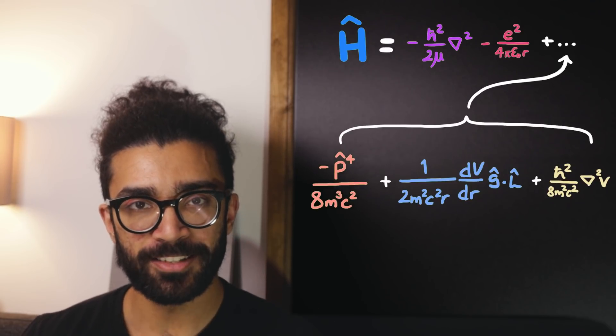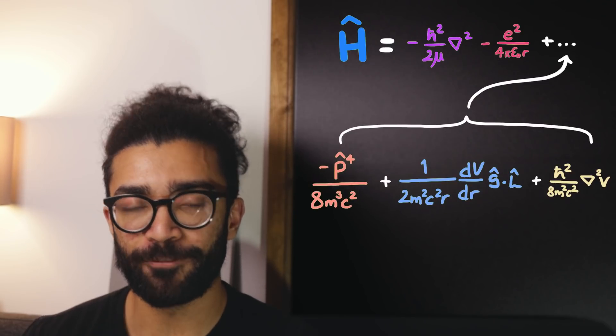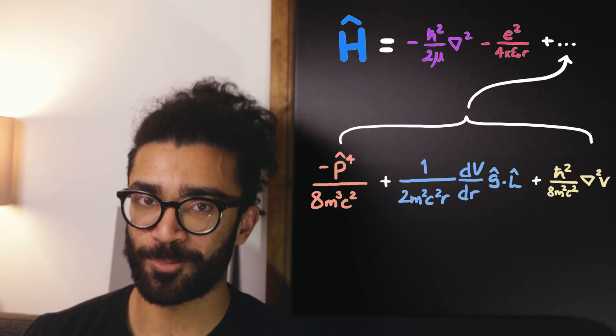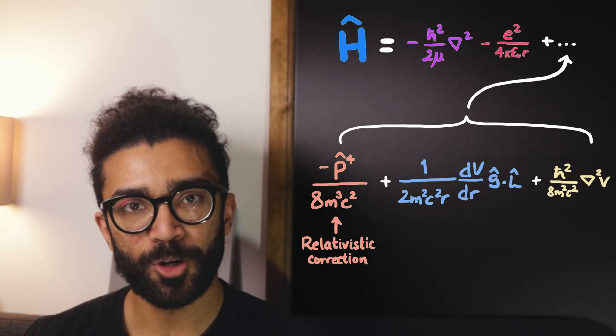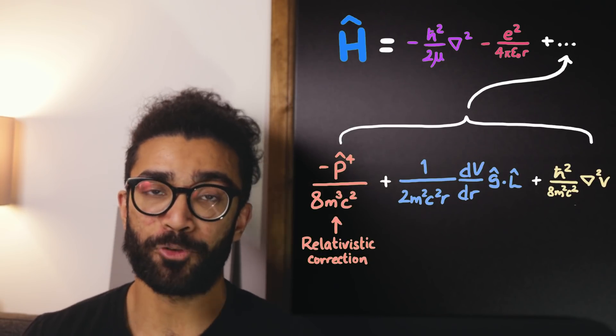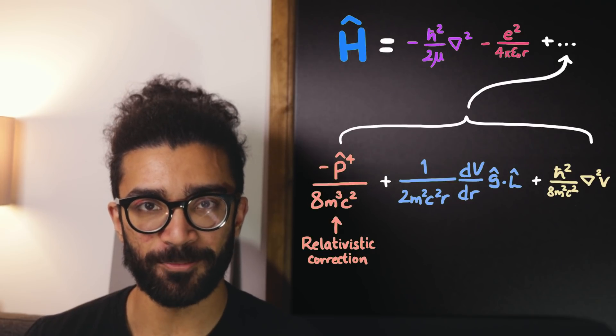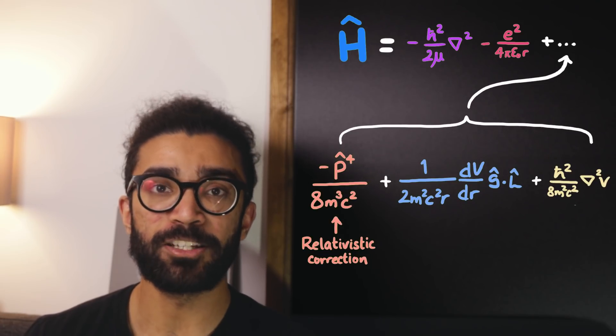Turns out there are three terms we need to consider if we want to correctly predict the fine structure using our quantum mechanical theory. These account, firstly, for a relativistic treatment of our system, because turns out the electron can move quite fast in a hydrogen atom. And so we do need to consider at least special relativity.